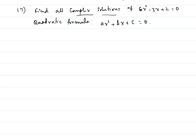This equation is not factorable. So we are going to use the quadratic formula for a quadratic equation to find the roots. The quadratic equation is in the form ax² plus bx plus c equal to 0, then x equals negative b plus or minus square root of b² minus 4ac all over 2a are the roots of the quadratic equation.